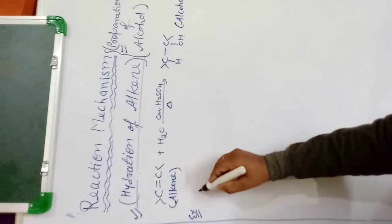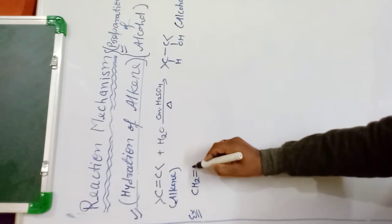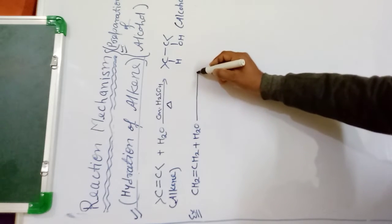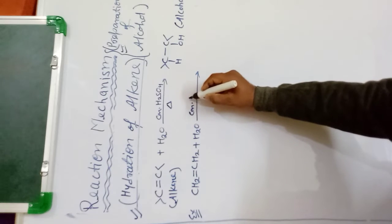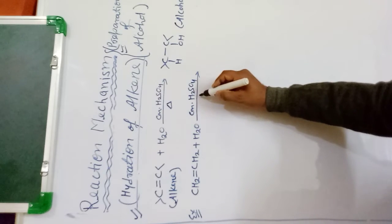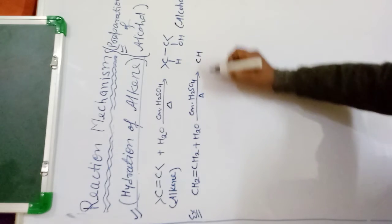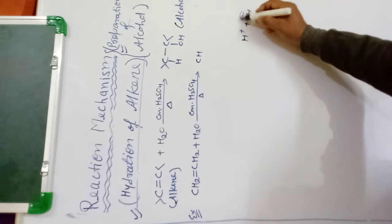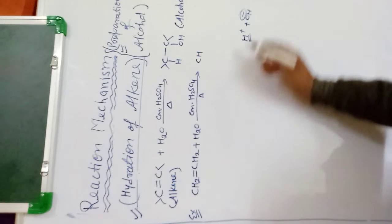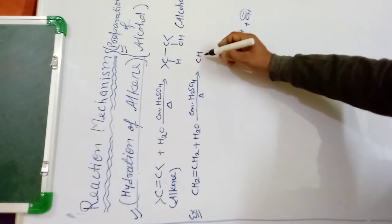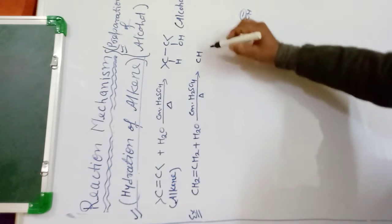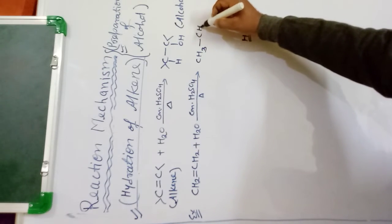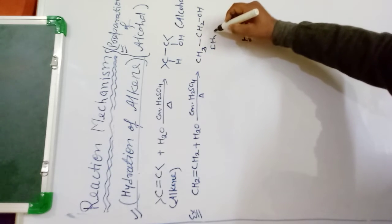Let's see with one example. Suppose ethene reacts with water in the presence of concentrated H₂SO₄, which provides H⁺ ions. H₂O dissociates as H⁺ plus OH⁻. The H⁺ attaches to one carbon and OH⁻ attaches to the other carbon. So this carbon becomes CH₃ and the other becomes CH₂OH, giving us ethanol.